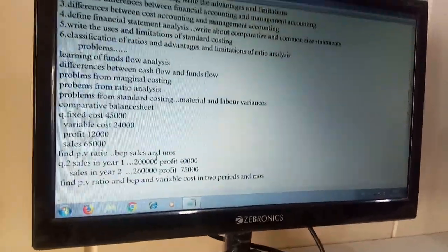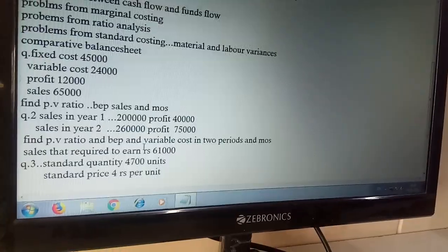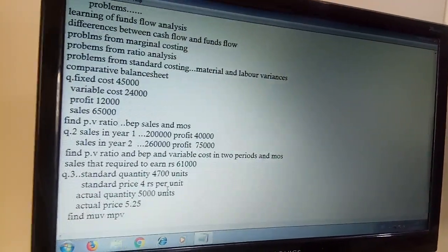In two periods there, they have given sales and profit. PV ratio is equal to change in profit by change in sales into 100.